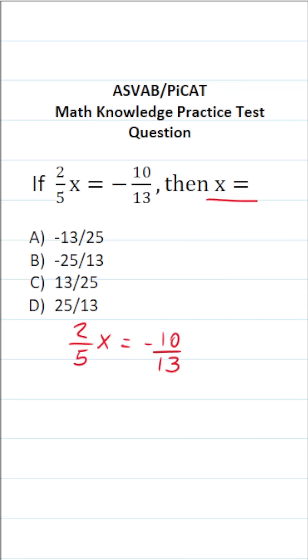Now, in order to get x by itself, the first thing we have to do is clear this two-fifths that's in front of x. And to do that, we're going to multiply both sides of this equation by the reciprocal of two-fifths, which is 5 over 2.